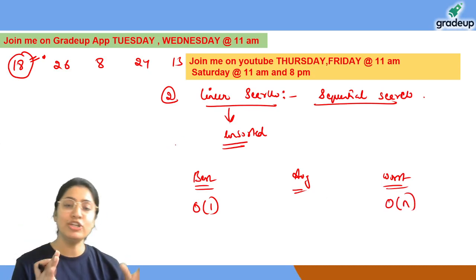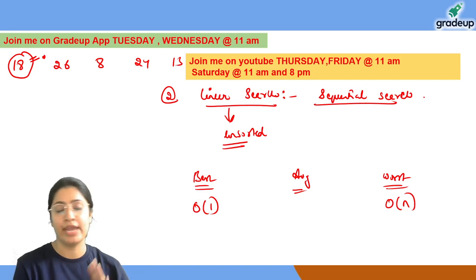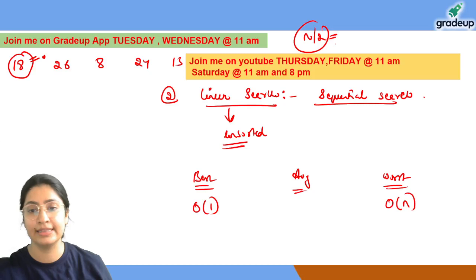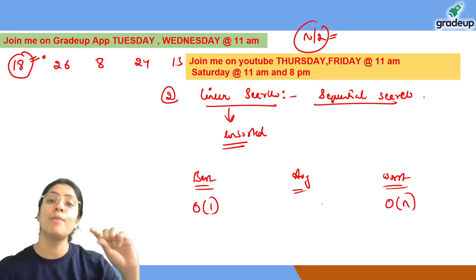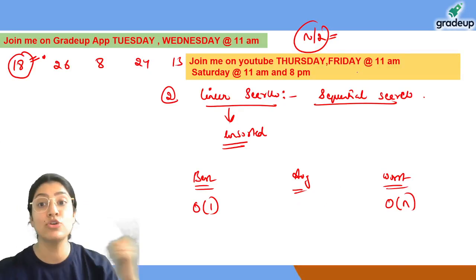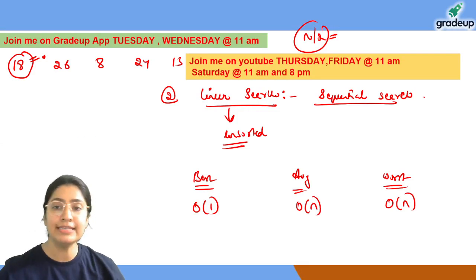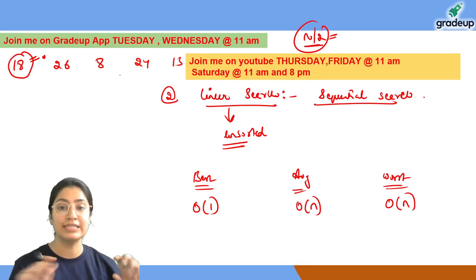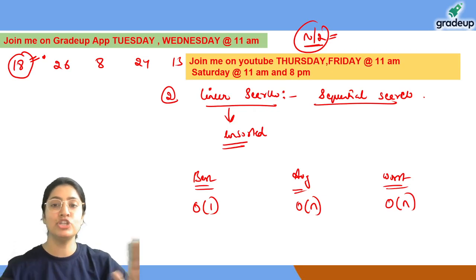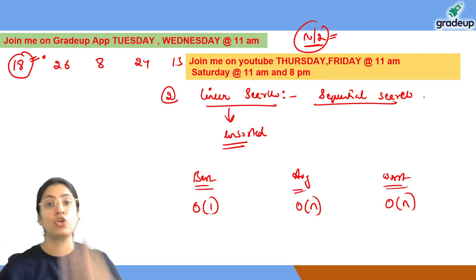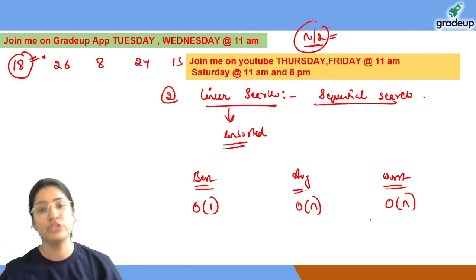The average case complexity is something in between. It is sometimes written as n/2, but when we write it in Big-O notation it still comes out as O(n). Average means we find our element somewhere in the middle — not at the very end, not at the very beginning.